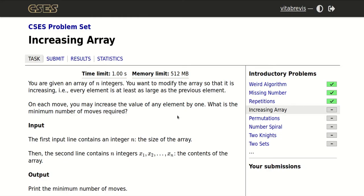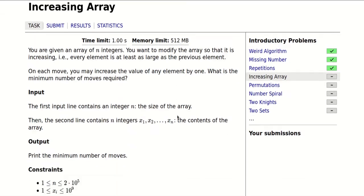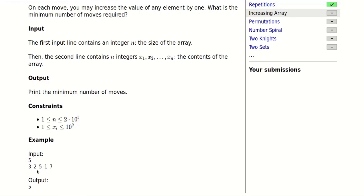On each move, we may increase the value of any element by one. So what is the minimum number of moves required? In this example, there is an issue here because two is smaller than three, so this is not increasing.